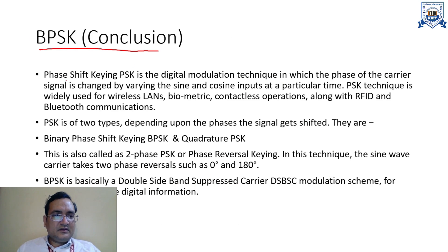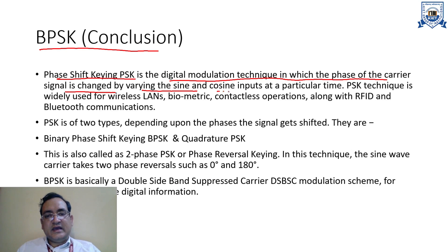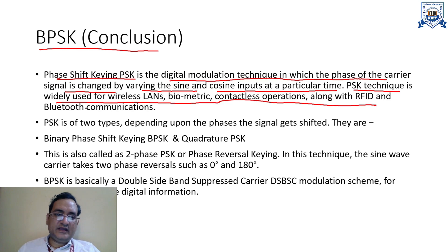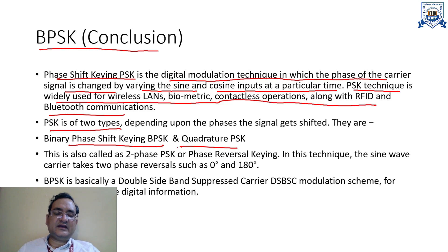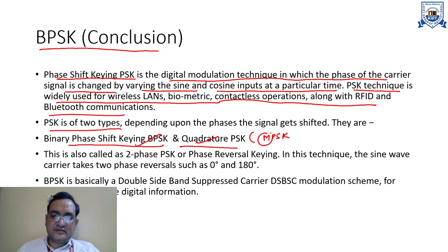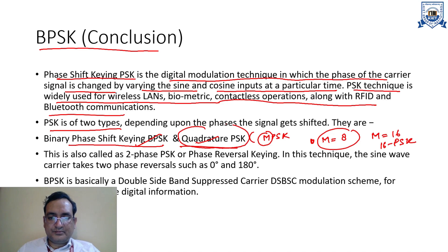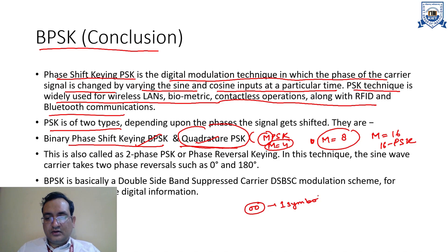Now I am going to conclude BPSK. Phase shift keying is the digital modulation technique in which the phase of the carrier signal is changed by varying the sine and cosine input at a particular time. PSK is widely used for wireless LAN, biometric, contactless operations along with RFID, and Bluetooth communication. PSK is basically of two main types: binary phase shift keying (BPSK) and QPSK. Other types include MPSK — 8PSK, 16PSK — where M is 8 or 16 respectively. In QPSK, M equals 4, meaning the combination of two bits represents one symbol.